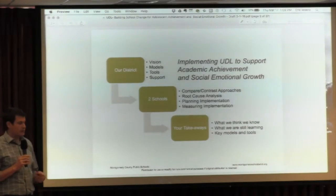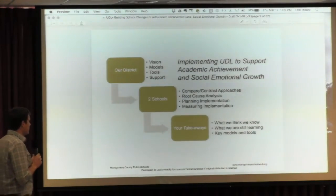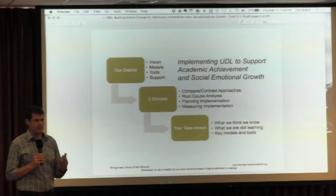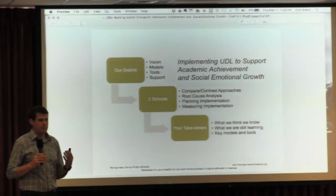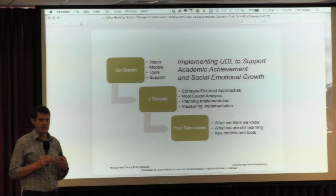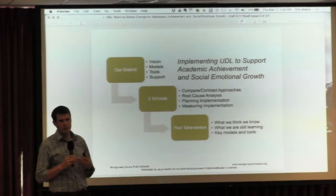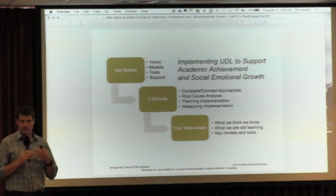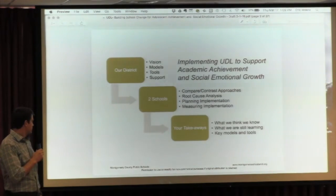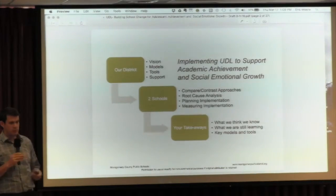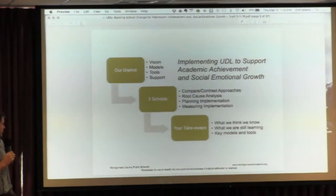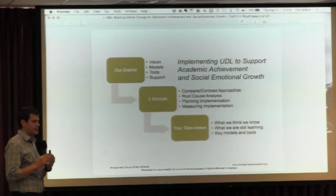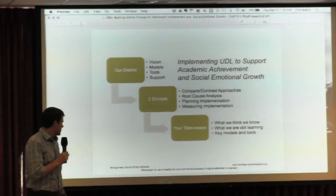Over the next hour, we'll look at universal design for learning and this concept of social-emotional growth. Our job is to help you see connections in how these things can go together, both conceptually and in terms of implementation. We'll look at our district, Montgomery County Public Schools, and how these two things combine. We'll look at two schools — one from Barbara's school and one from Bud's school — and talk about how they have approached concurrently addressing UDL and SEL and some key components of that.